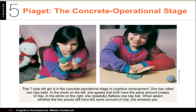There are a lot of achievements during this stage. These include things like reversibility, decentration, conservation, transitivity, seriation, and class inclusion. I invite you to look at the book for the definitions of each one of those. Conservation is particularly interesting because what we have right here in this slide is the conservation of volume.